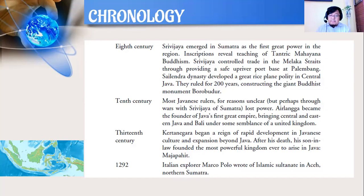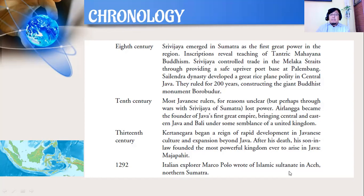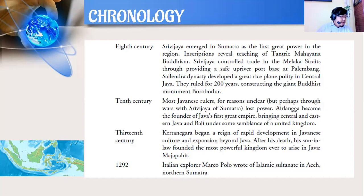Also in 1292, Italian explorer Marco Polo wrote of an Islamic Sultanate in Aceh, northern Sumatra. Jadi Marco Polo menulis tentang Kesultanan Islam yang ada di Aceh, Sumatra bagian utara. This is significant — it marks one of the earliest records of Islamic presence in Indonesia.